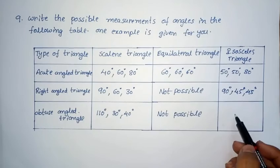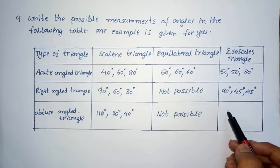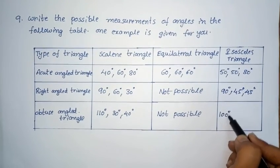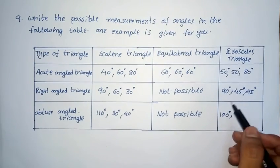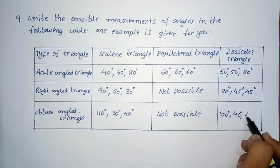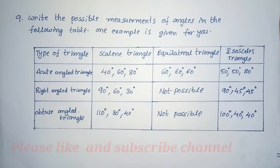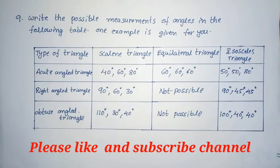For scalene triangle and obtuse angle triangle: one angle is more than 90 degrees, so 110 degrees, with remaining angles 30 and 40 degrees — all different, satisfying scalene. For equilateral triangle and obtuse angle triangle: not possible, since equilateral triangle cannot have an obtuse angle. For isosceles triangle and obtuse angle triangle: one angle is 100 degrees, and the remaining two equal angles are 40 and 40 degrees. This is the complete solution for the ninth problem. Thanks for watching — please subscribe to my channel.